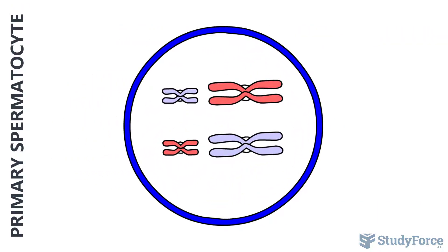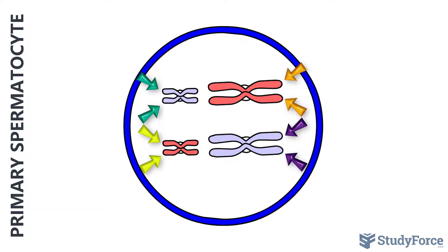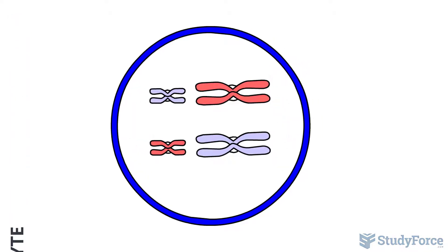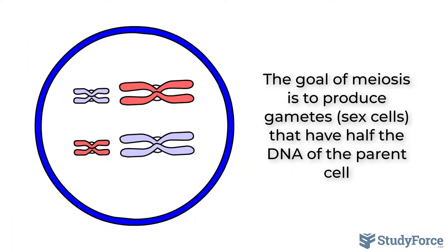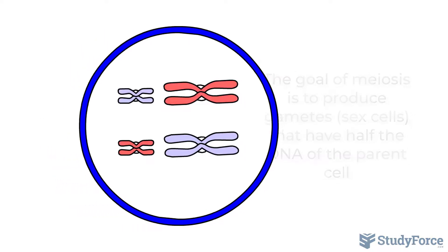Before the primary spermatocyte enters the first stage of meiosis, its DNA is replicated. Notice how the primary spermatocyte has eight chromosomes in total — that's double what it had originally. Meiosis is a type of cell division that reduces the number of chromosomes in a cell before reproduction, and it requires that the cell double its chromosomes first.